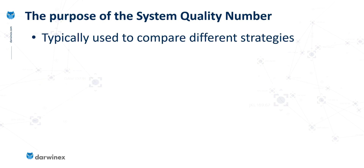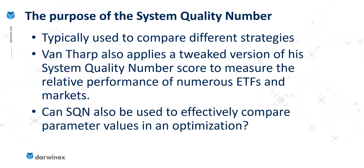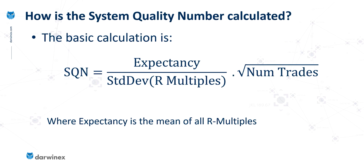The primary purpose of the SQN is to compare different strategies. Van Tharp has also applied a tweaked version of the SQN in order to measure the relative performance of numerous ETFs and markets, but this is an area I'm not going to study — if you want more information about this, I suggest you go to Van Tharp's website. What I'm more interested in is whether the SQN can also be used to effectively compare the parameter values from an optimisation. Let's take a look at how the SQN is calculated.